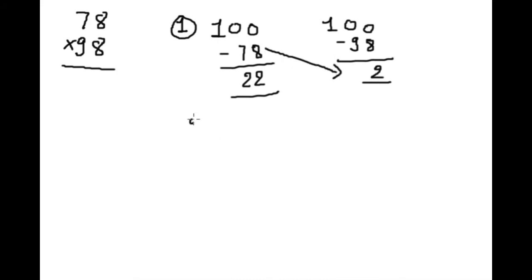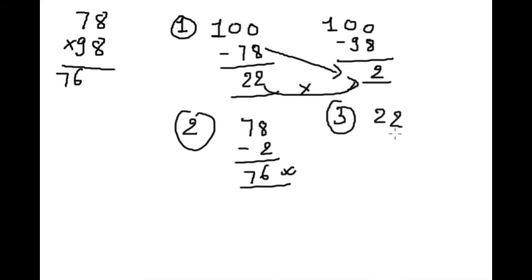First example: 78 into 98. Step 1: subtract from 100 both the numbers. This is 22 and this is 2. Now subtract, step 2: 78 minus 2 equals 76. This is our first two digits of answer. Step 3: 22 into 2 equals 44. Only three steps and here is our answer.